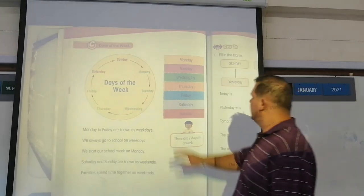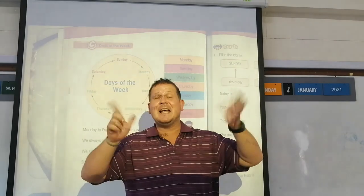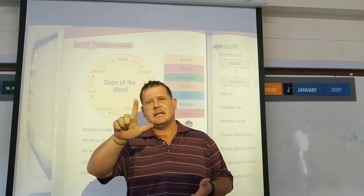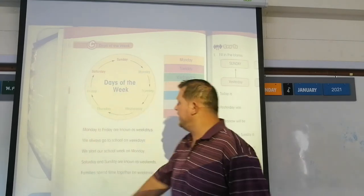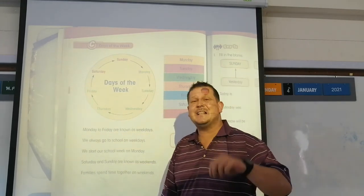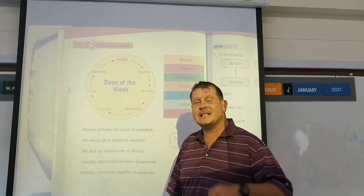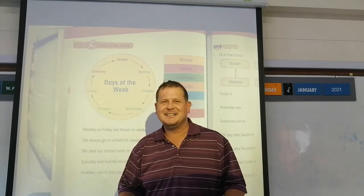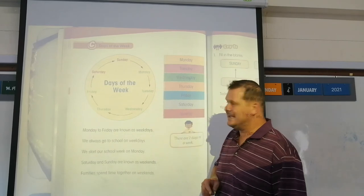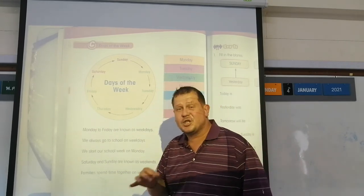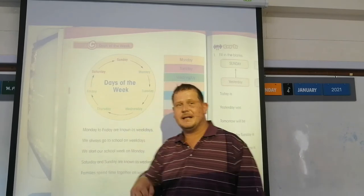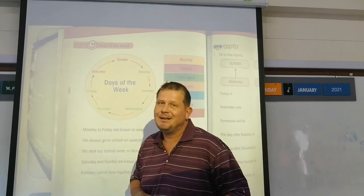Just quickly — days of the week. We know there are 7 days in the week: Monday, Tuesday, Wednesday, Thursday, Friday, Saturday, Sunday. Monday to Friday are known as weekdays — also the days that we go to school. We start our school week on a Monday, unless it's a long weekend, in which case we go on Tuesday.